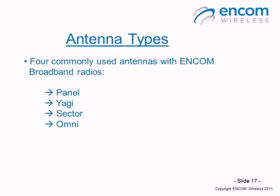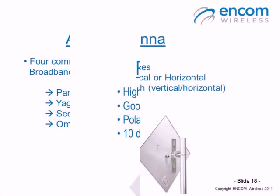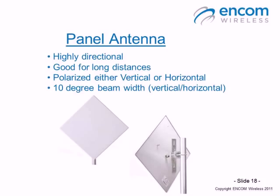With ENCOM broadband radios, there are four commonly used antennas: panel, Yagi, sector, and omni. The most commonly used is the panel antenna, which is a highly directional antenna excellent for long-distance shots. It has a very narrow beam width of about 10 degrees on both the vertical and horizontal planes. On the back of these panel antennas is a sticker labeled polarization, indicating the antenna can be polarized in either a vertical or horizontal fashion.